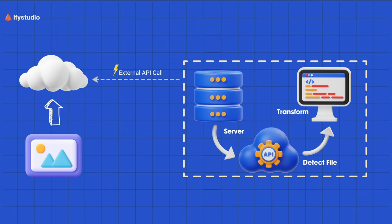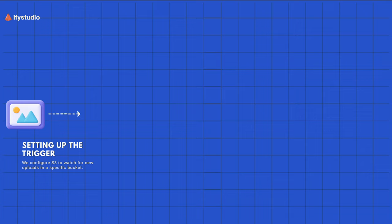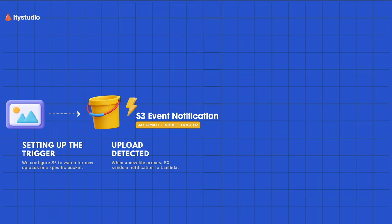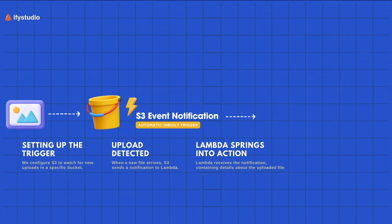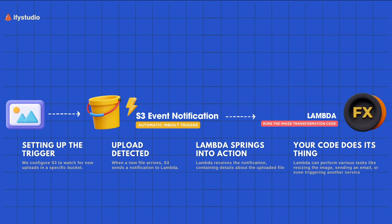With S3 and Lambda, you don't have to do any of that. Whenever an image or file is uploaded to the S3 bucket, you set up a trigger — which we'll be configuring in the live demo in a couple of minutes. Using that trigger, each time an upload is detected, an S3 event notification is triggered. This is a built-in trigger with an endpoint attached to it, and in our case the endpoint is the Lambda function. Lambda then springs into action, executes whatever code you've written inside it, and the job is done — super simple.